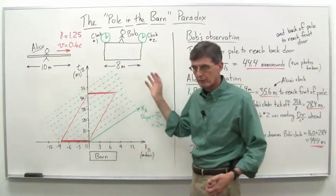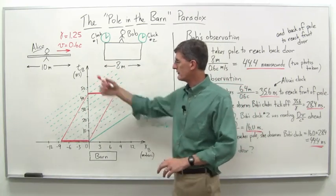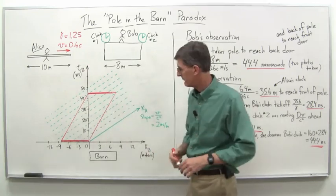Just as we had the picture of the pole still sticking out the front end, because from her perspective, the pole is 10 meters, the barn is only 6.4 meters.